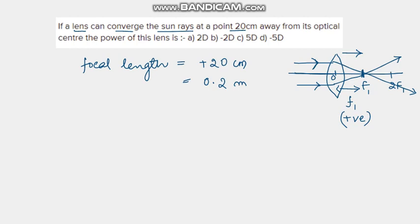Now that we have the focal length, we can find the power, which is what is asked. Power is the reciprocal of focal length expressed in meters. The power of a lens gives the converging or diverging ability of the lens — to what extent it converges, in the context of a convex lens. Let's find out what is the power of this lens.